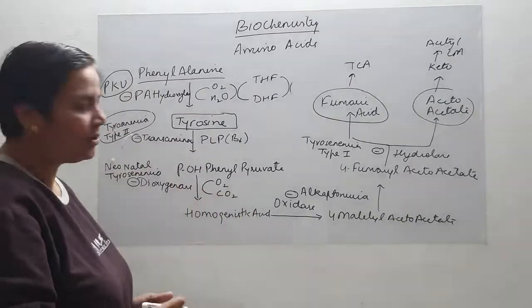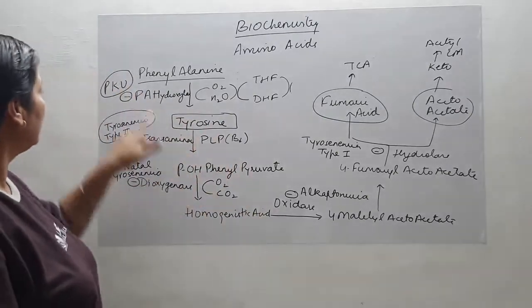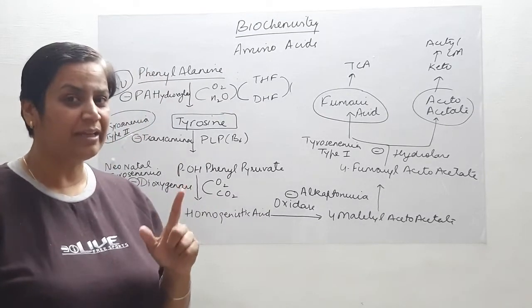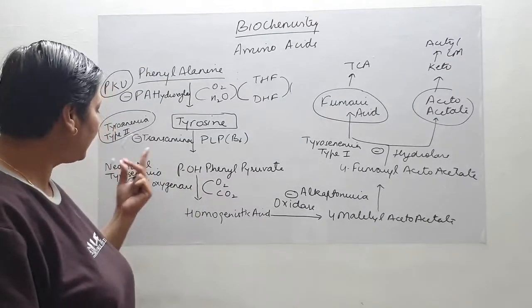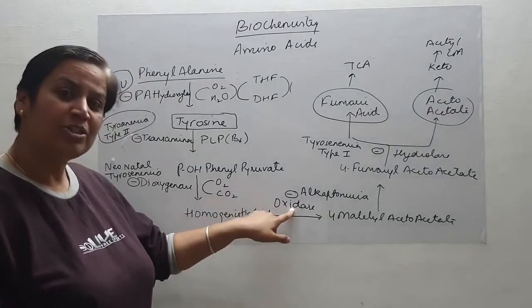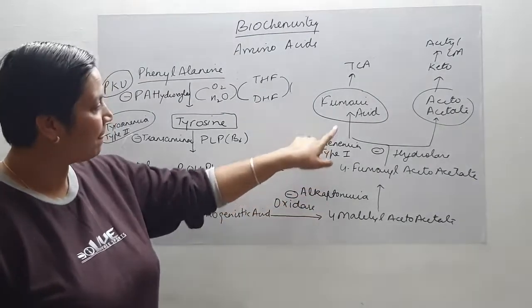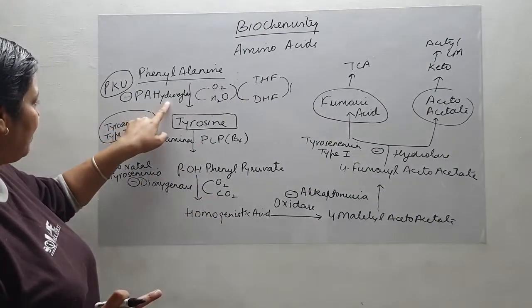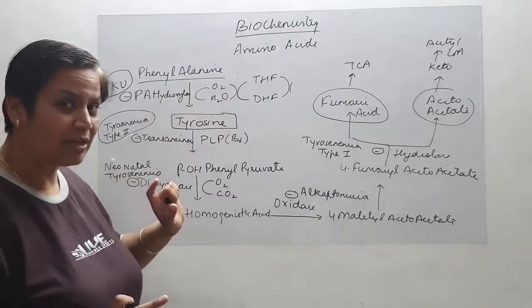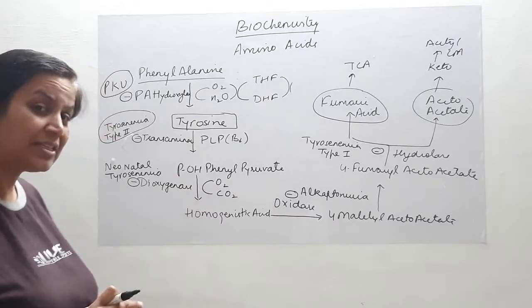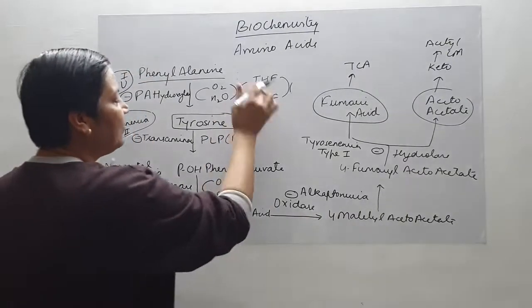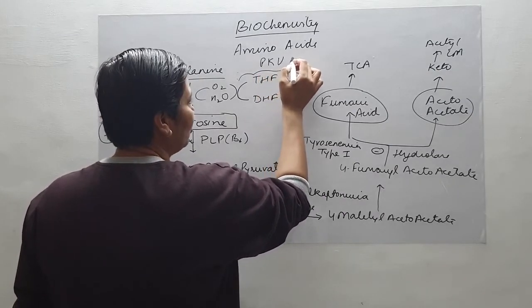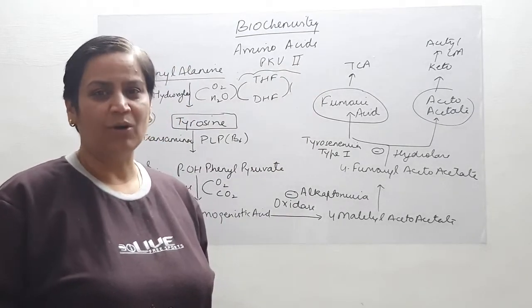These are the major inborn errors of metabolism associated with the catabolism of phenylalanine and they are easy to remember. Deficiency of phenylalanine hydroxylase leads to phenylketonuria type 1, and deficiency of dihydrobiopterin reductase leads to phenylketonuria type 2. This is how we study the catabolism of phenylalanine.